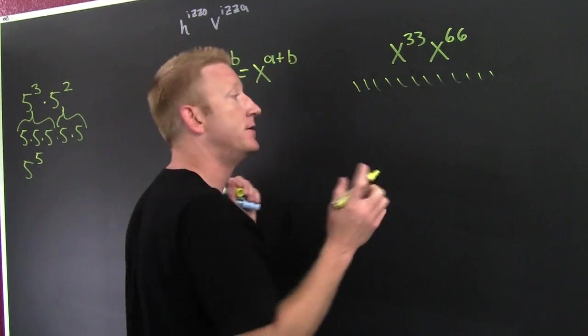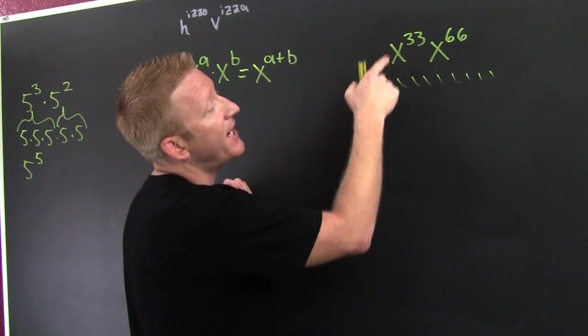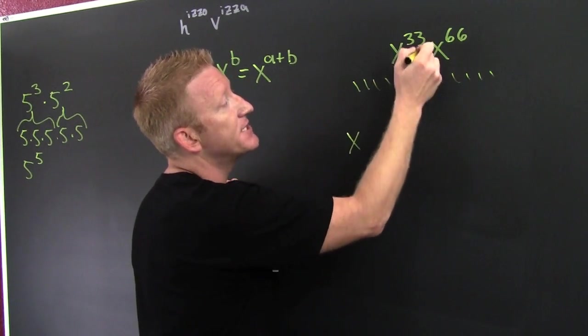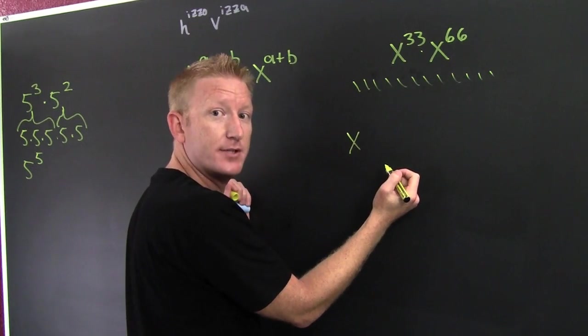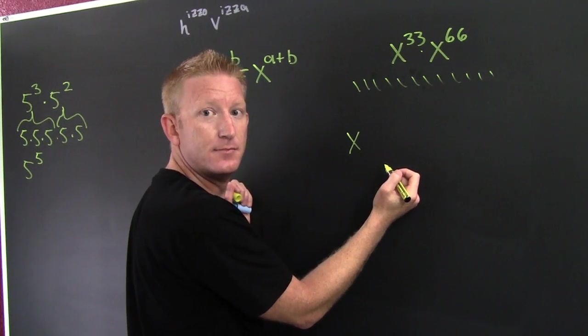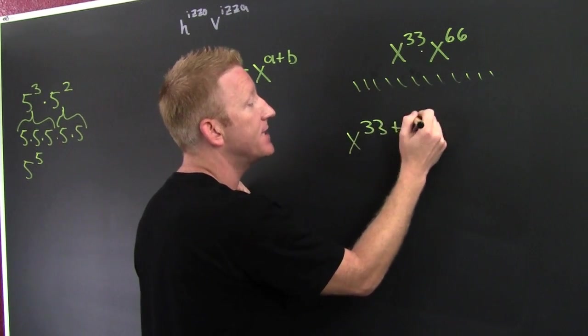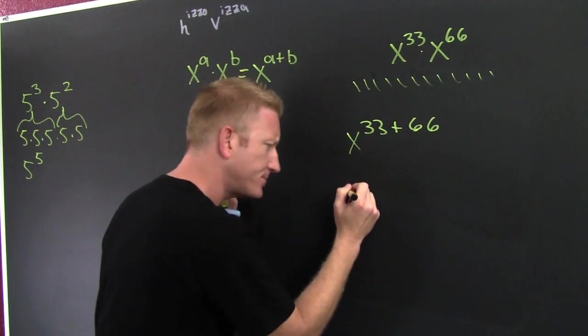I have x to the 33 and x to the 66, so that's x to the - if I have the same base and I'm multiplying, what am I going to do to their exponents? Adam, I'm going to add them. This is 33 plus 66.